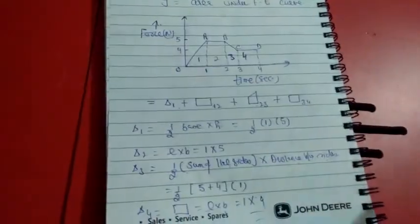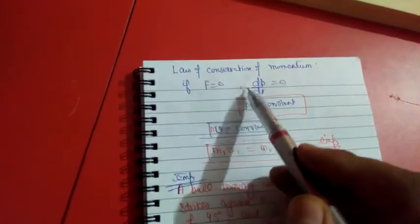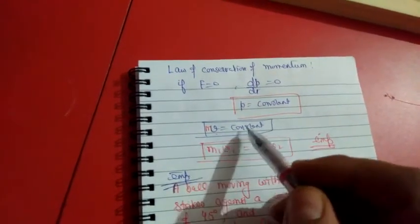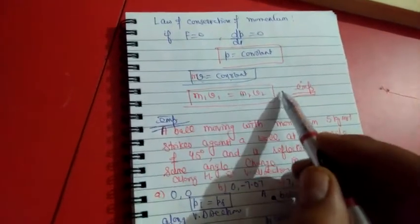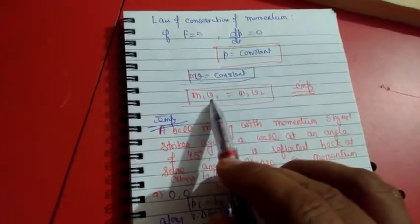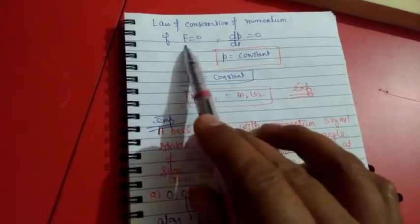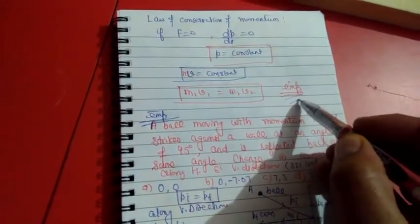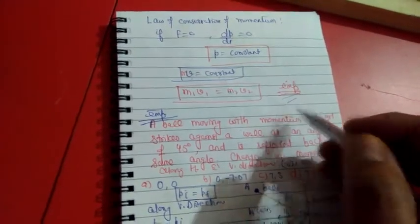Students, as we know, the law of conservation of momentum states: if no external force acts on the particle, then the momentum of the particle is constant — mass times velocity is constant, meaning the particle moves with constant velocity. If initial momentum is P₁, then final momentum P₂ must be equal to P₁. This is a very important topic, and questions may come from it in the NEET 2018 exam.